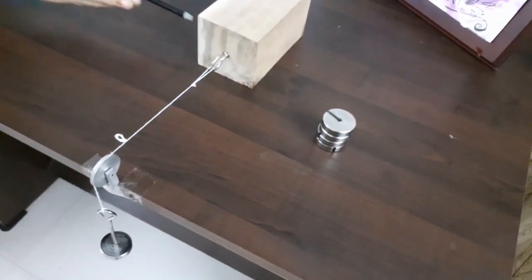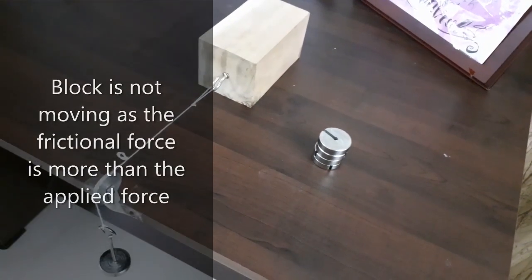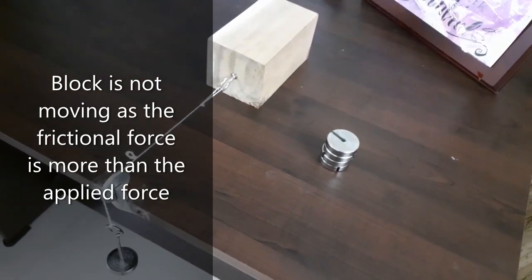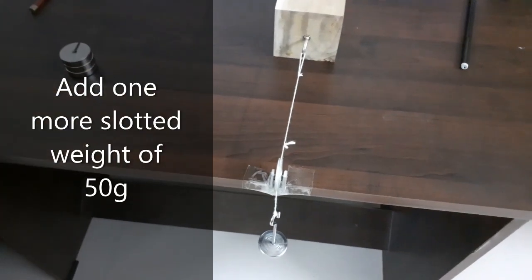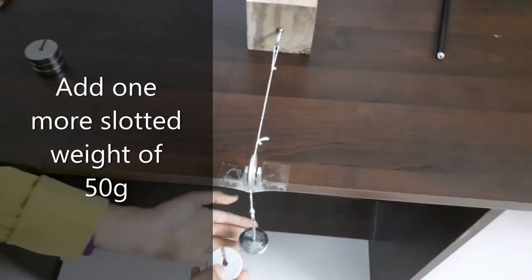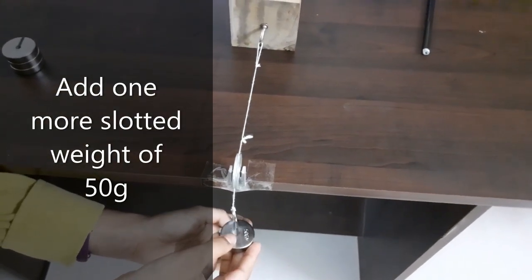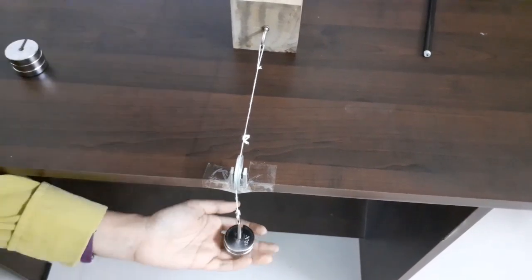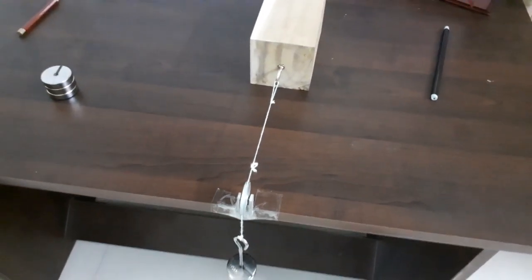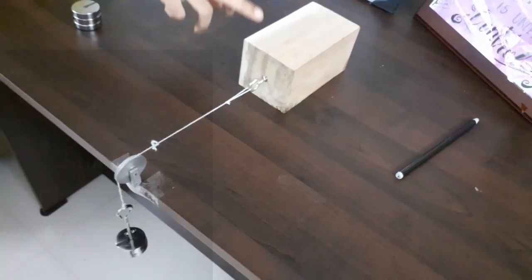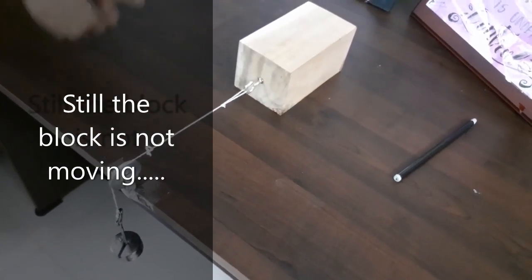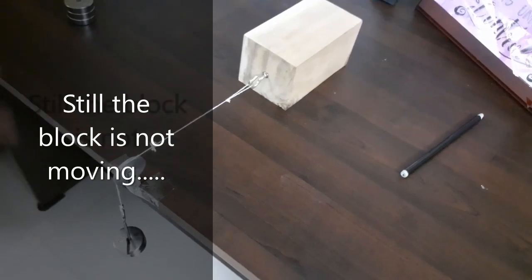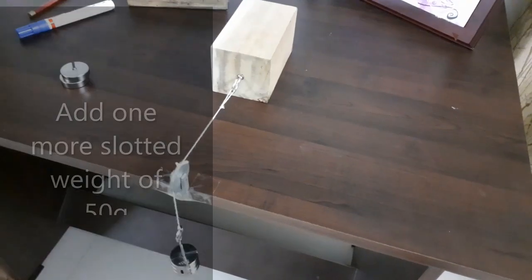Observe that the block is not moving, which means the frictional force is more than the applied force. Now let us add one more slotted weight of 50 gram to the applied force. Can you observe that the block is still not moving? This means that the frictional force is more than the applied force of 100 grams.